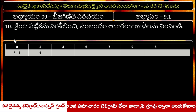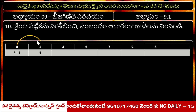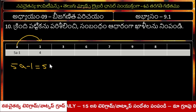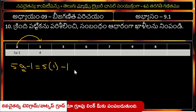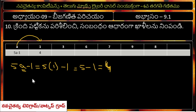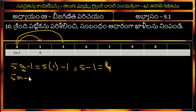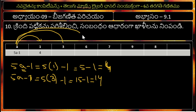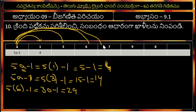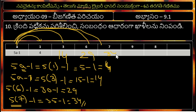a equals 1: 5 into 1 minus 1 equals 4. a equals 3: 5 into 3 minus 1 equals 15 minus 1 equals 14. a equals 2: result is 14. Next, a equals 6. a equals 4: 3 minus 1 equals 29. Now 7: 7 into 1 is 14, so 7 times 5 is 35. The answer is 34.